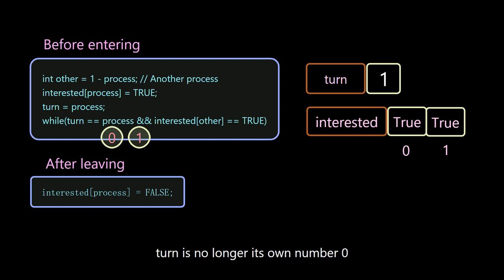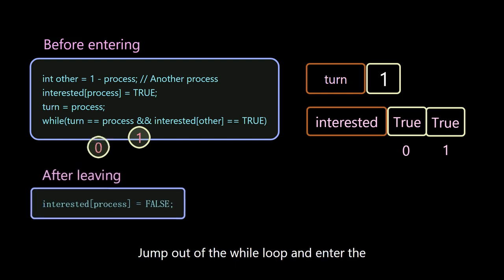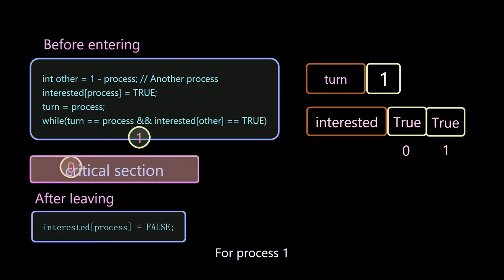For process 0, turn is no longer its own number 0. Jump out of the while loop and enter the critical section. For process 1, turn is its own number, and the 0 bit of the other party's interested is also true.